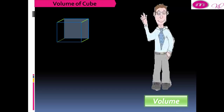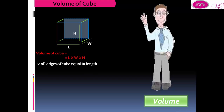The volume of a cube equals length by width by height. Because all edges of a cube are equal in length, therefore the volume of a cube equals the length of an edge multiplied by itself by itself.